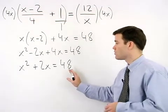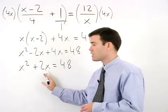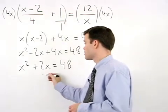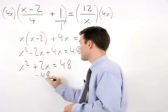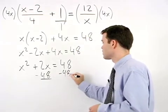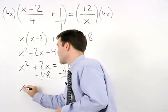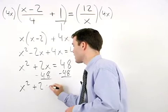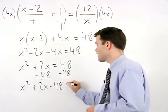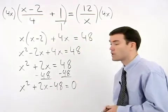So our next step is to move the 48 to the left side of the equation by subtracting 48 from both sides and we have x squared plus 2x minus 48 equals 0.